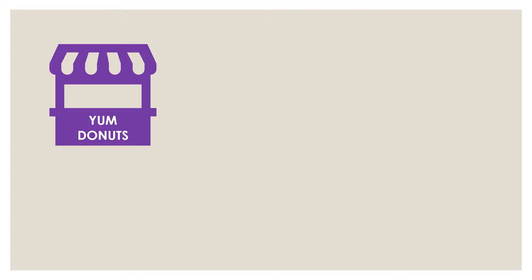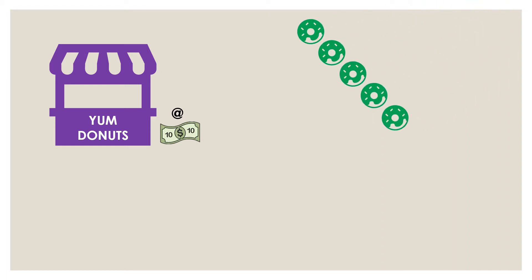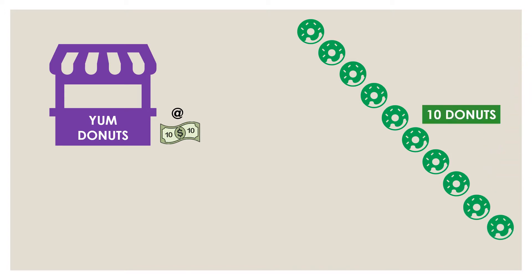Imagine there is a store called Yum Donuts, and this store is selling donuts for $10 each. On a particular day the store started selling donuts, and at the end of the day the store was able to sell a total of 10 donuts. By the way, did you know that Dunkin' Donuts, one of the largest donut chains in the world, actually makes more money by selling coffee rather than donuts?